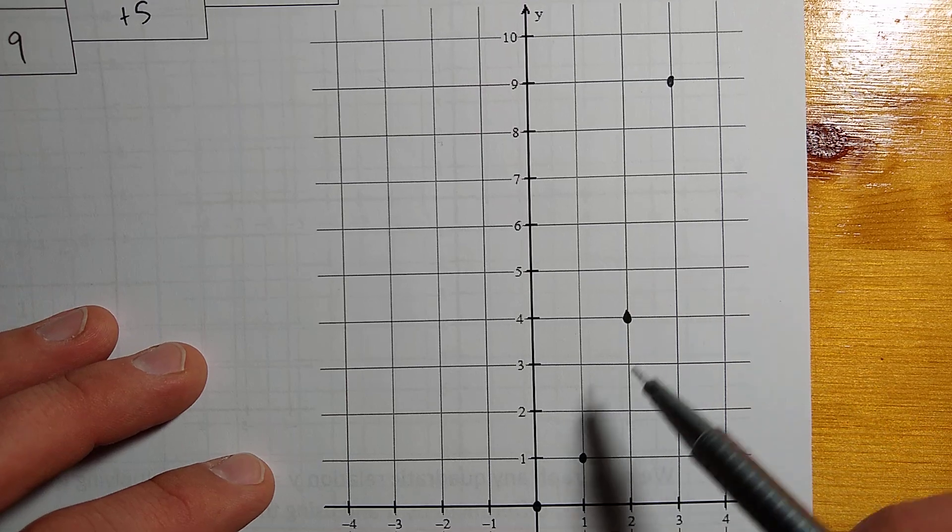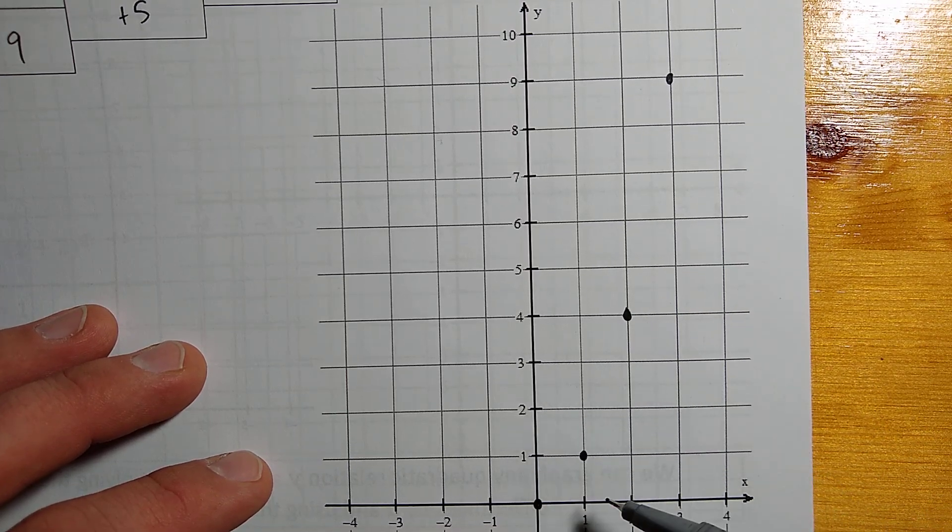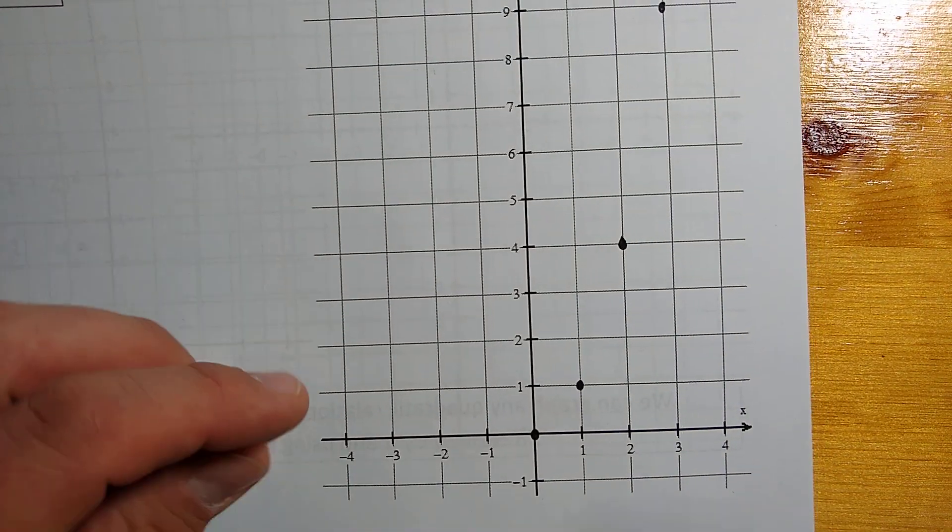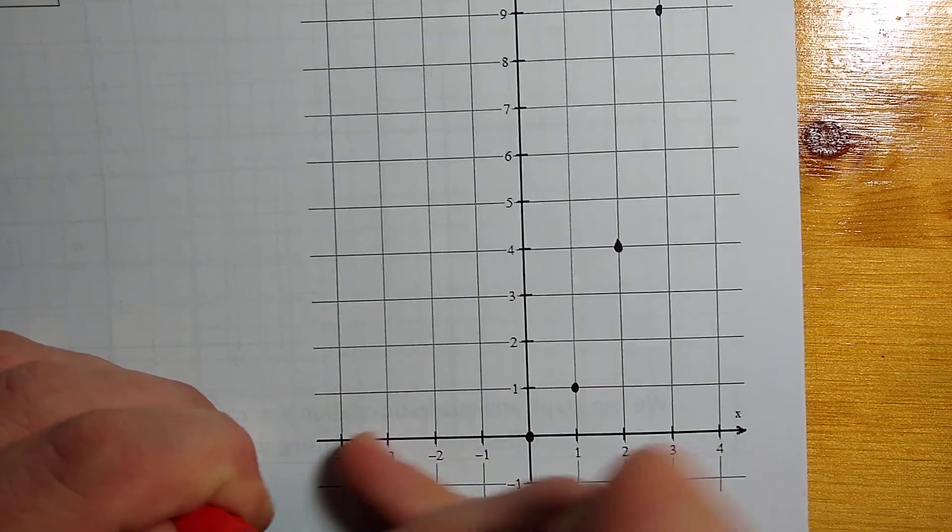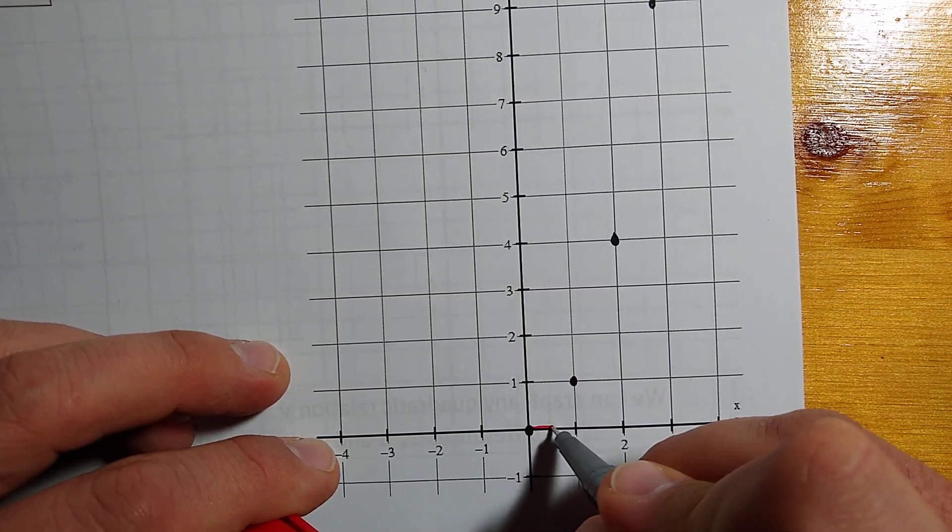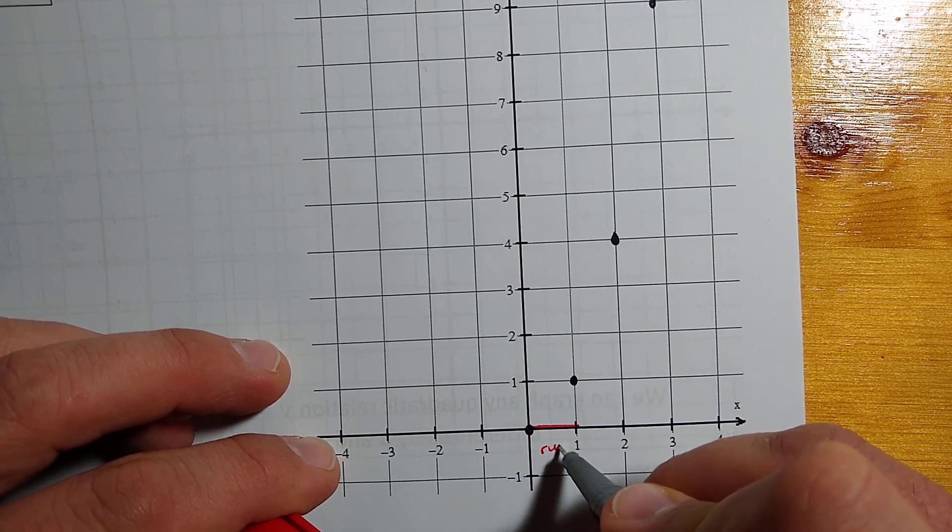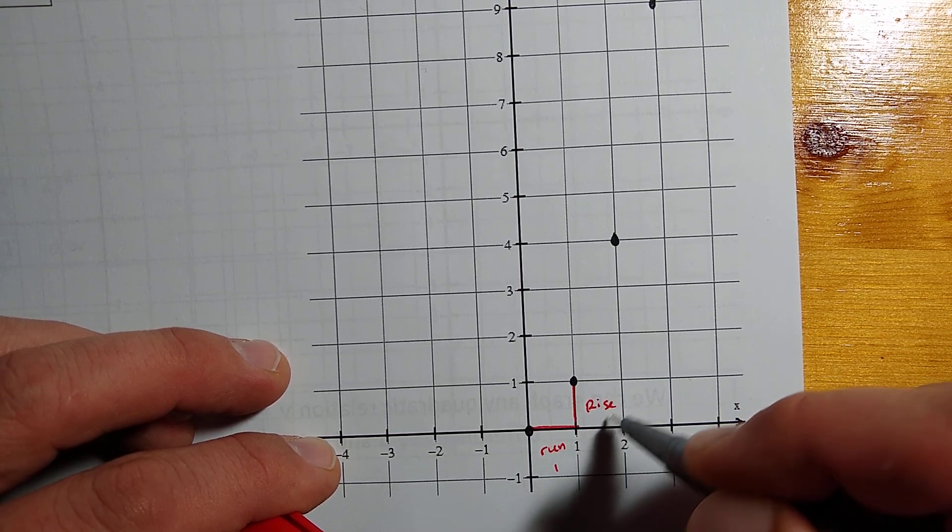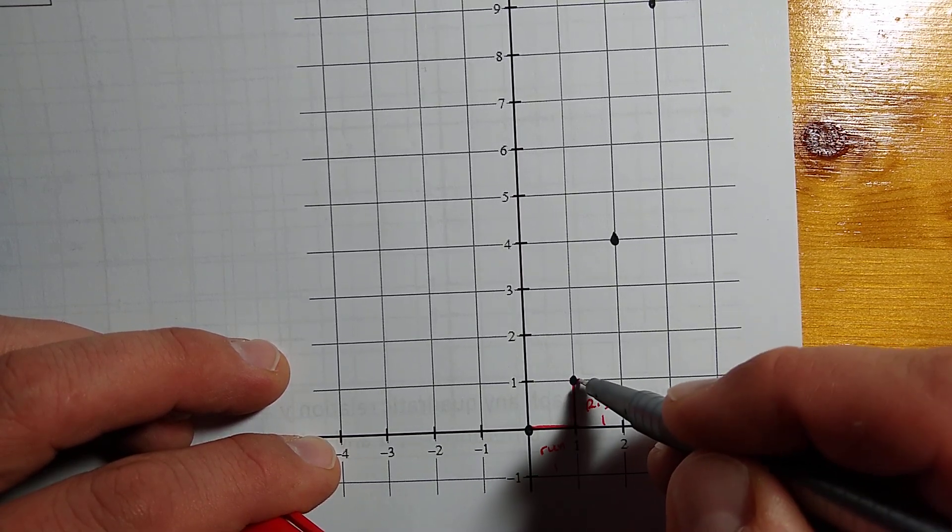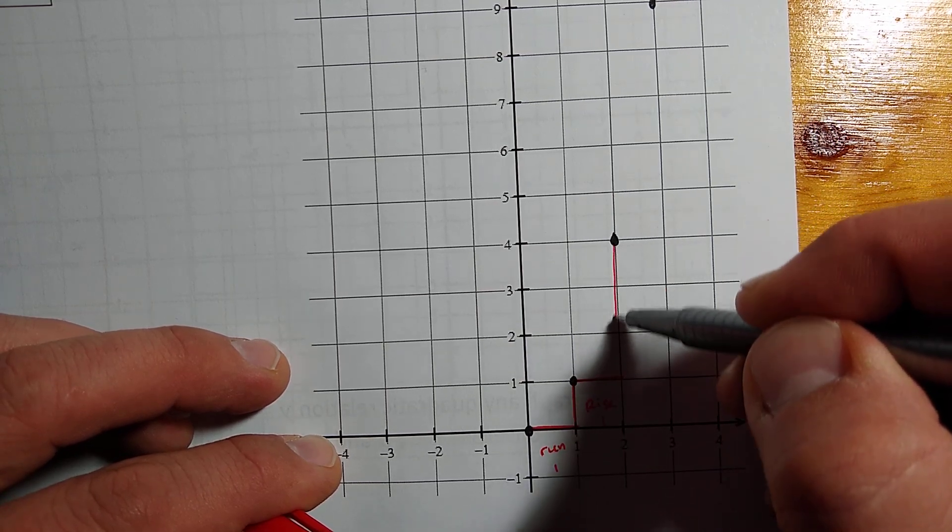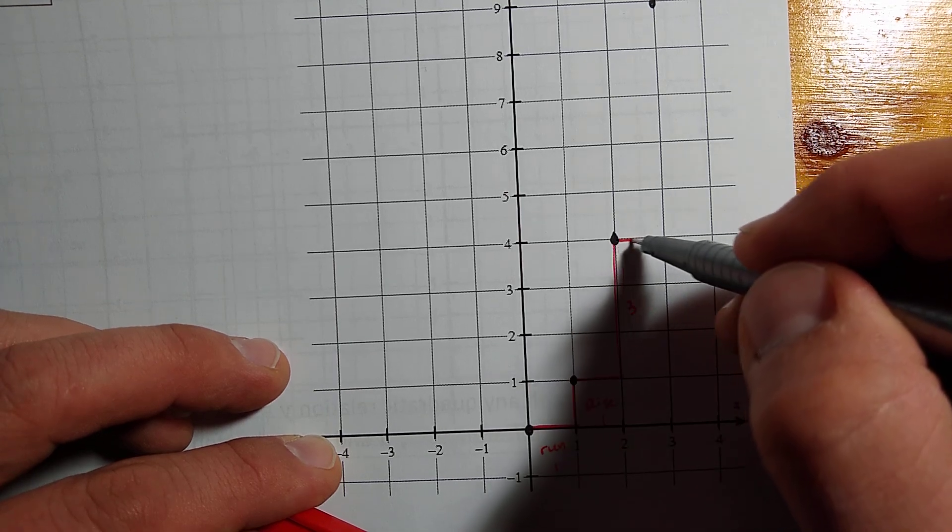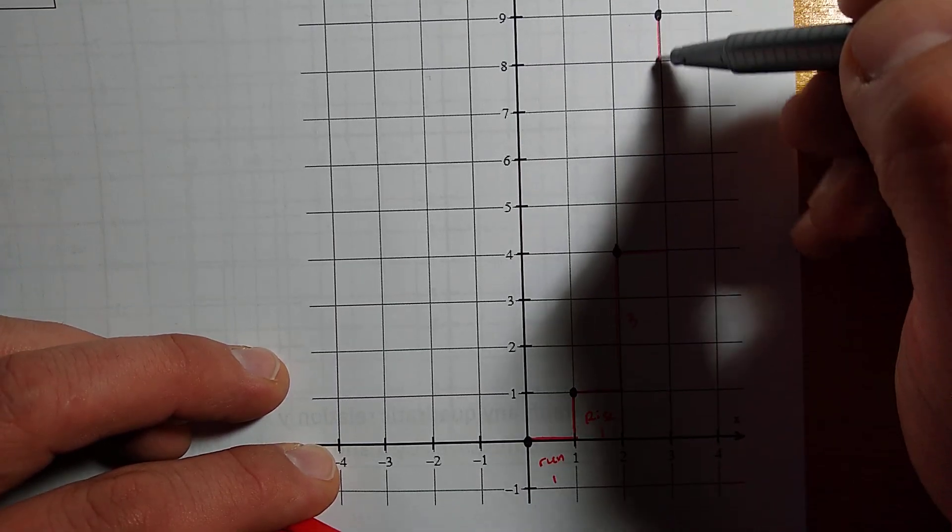Now that pattern, the second differences tell us about, it increases by 2 every time. So I'm going to just grab a color here. For a run of 1, we have a rise of 1 first. Then we have another run of 1, always a run of 1, and a rise of 3. Another run of 1, and a rise of 5.